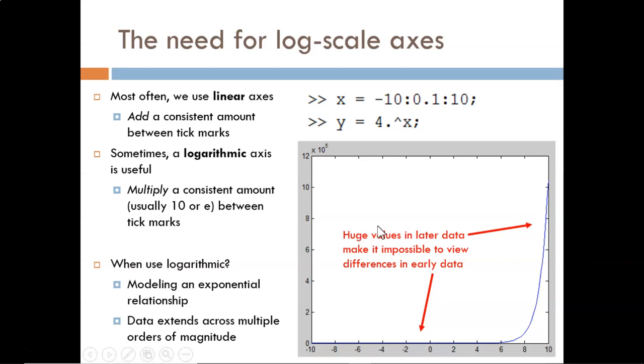In this example, using a linear scale y-axis, the data is growing exponentially throughout the plot. But most of the data just looks like a flat line at zero. The huge later data makes it impossible to see changes in the earlier data.